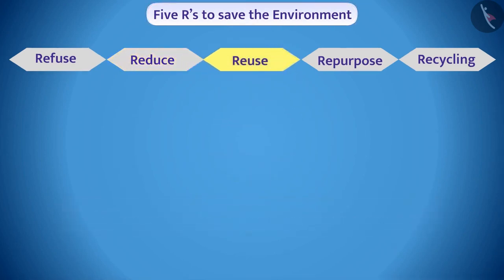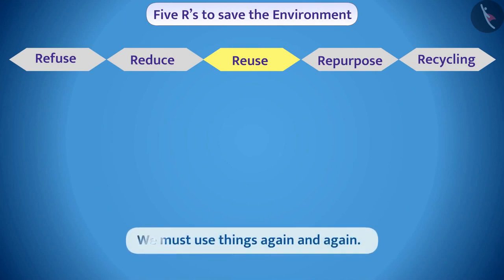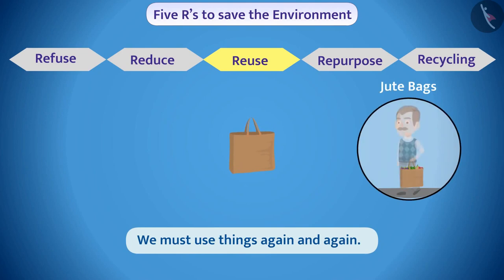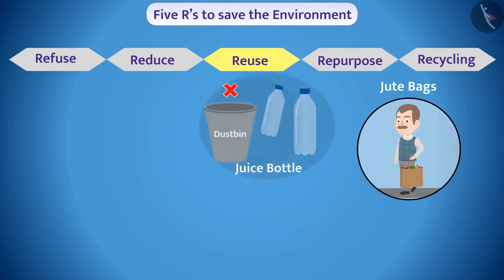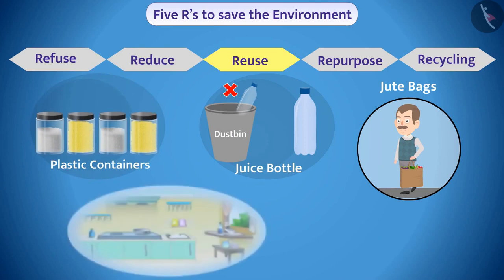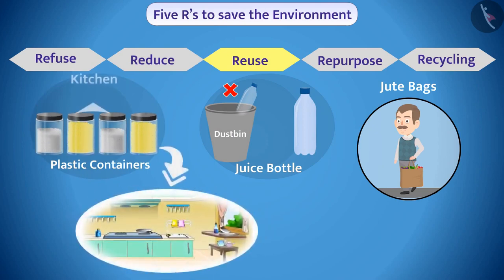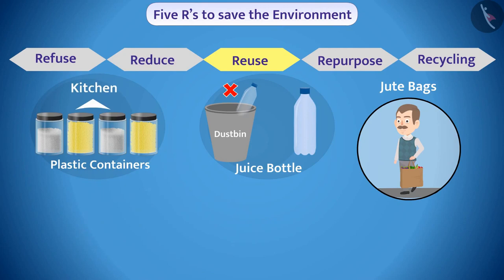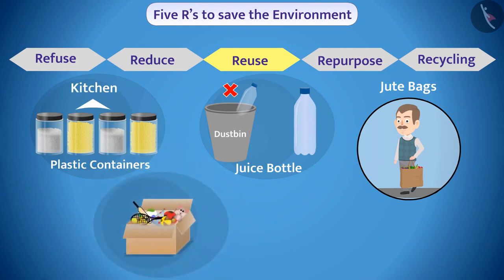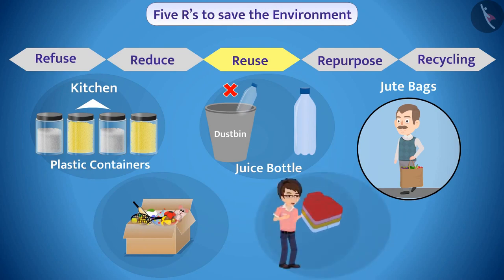The third R is Reuse. We must use things again and again. For example, a jute bag can be used repeatedly to carry things. Instead of throwing away a juice bottle, we can use it to store water. Plastic containers can be used to keep things in the kitchen, and boxes used in packaging can be used to store things.